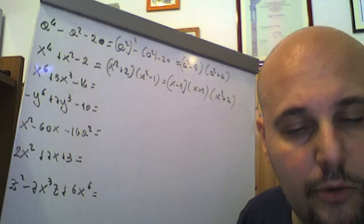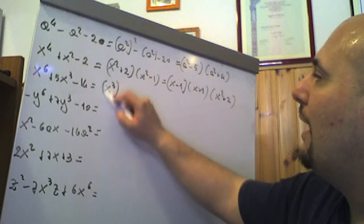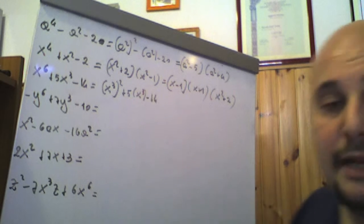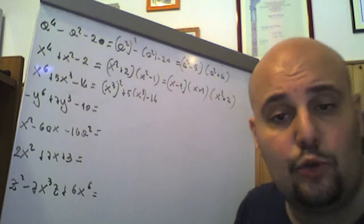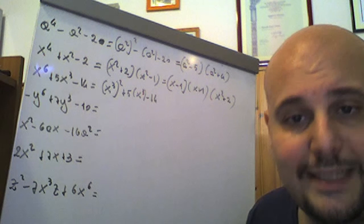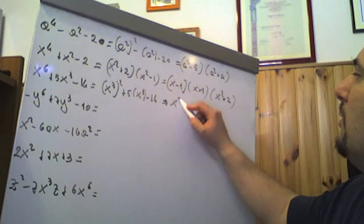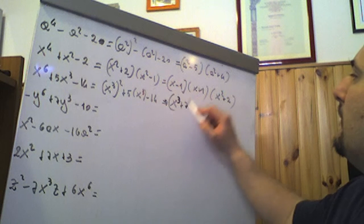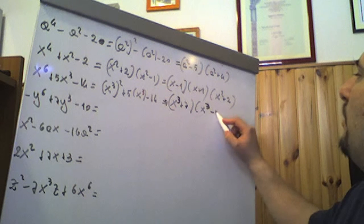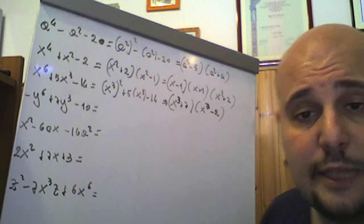X⁶ + 5x³ − 14 è un'altra biquadratica; questa volta la variabile è x³, poiché x⁶ = (x³)². Possiamo porre x³ = t (variabile ausiliaria) e notare che −14 = 7 × (−2), con 7 − 2 = 5. Quindi questo è (x³ + 7)(x³ − 2), scomposizione di x⁶ + 5x³ − 14.